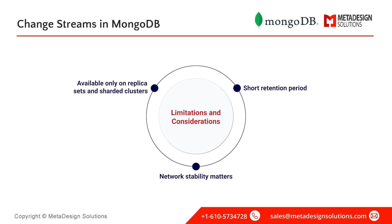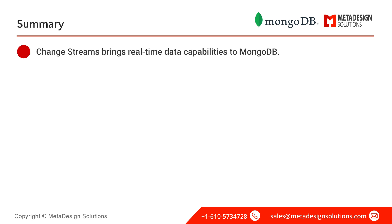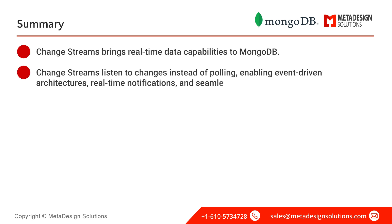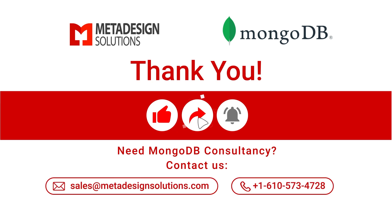To mitigate these issues, applications should implement resume tokens, which allow change streams to restart from the last processed event after a disconnection. And that's how change streams bring real-time data capabilities to MongoDB. By listening to changes instead of polling, they enable event-driven architectures, real-time notifications, and seamless microservices integration.